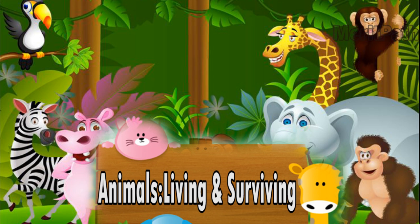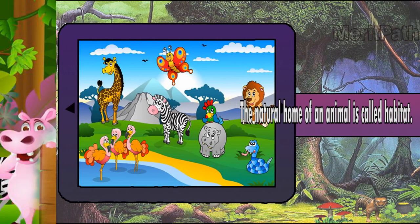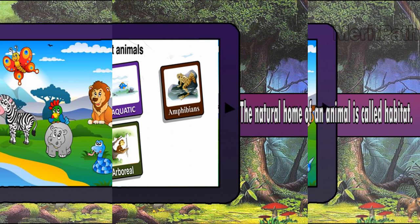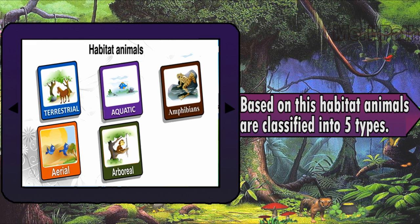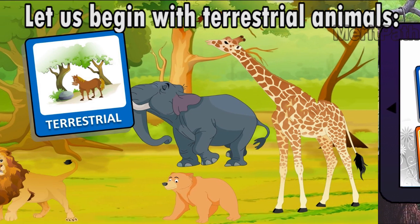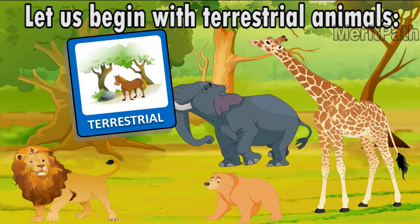Animals living and surviving — the natural form of an animal is called its habitat. Based on their habitat, animals are classified into five types: terrestrial animals, aquatic animals, amphibians, aerial animals, and arboreal animals. Let us begin with terrestrial animals.